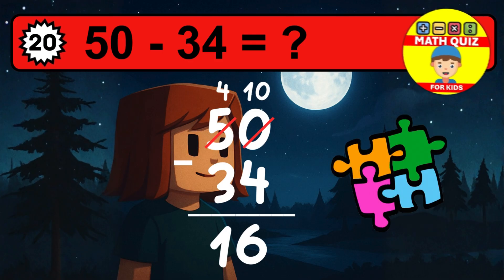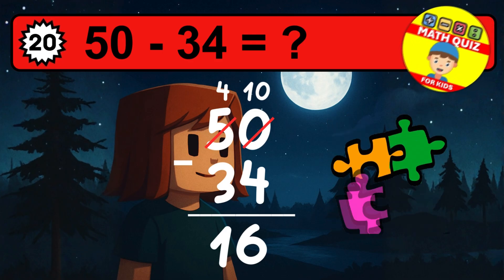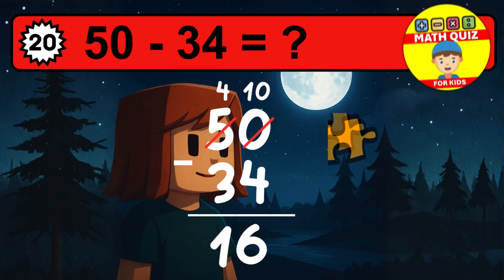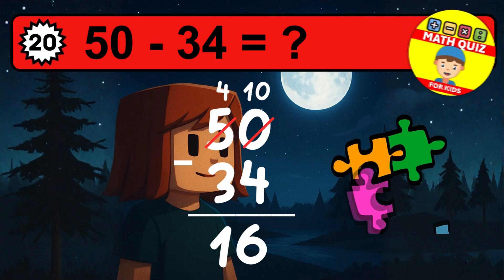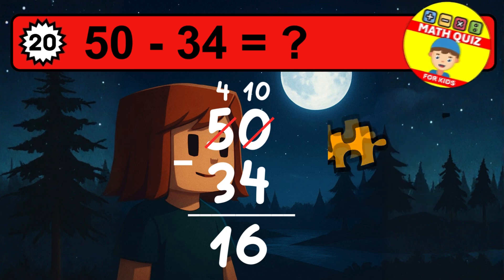Then we go to the tens. Four minus three is one. The final answer is sixteen.